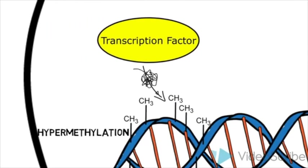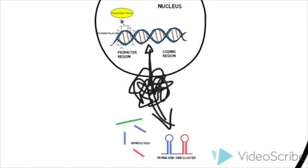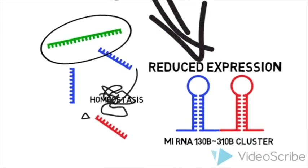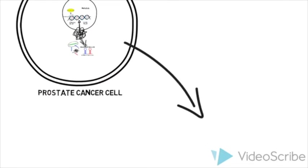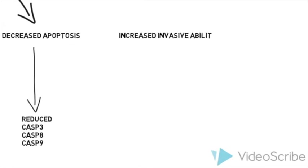As a result, the microRNA 130b-310b expression levels are reduced and the target messenger RNA is not silenced, causing this cellular homeostasis to be disrupted. These prostate cancer cells express a variety of cancer hallmarks including decreased apoptosis, shown by reduced expression of CASP3, 8 and 9, as well as increased invasive ability highlighted by a decrease in the cell adhesion protein CD44.